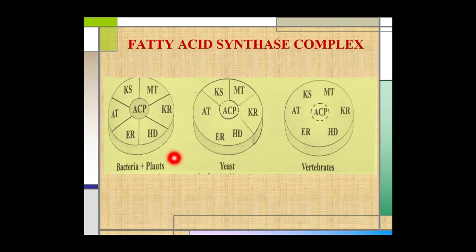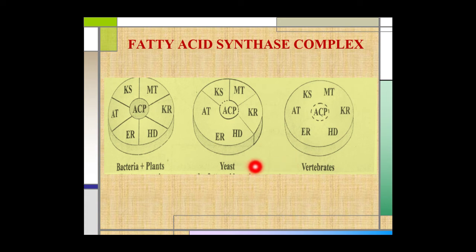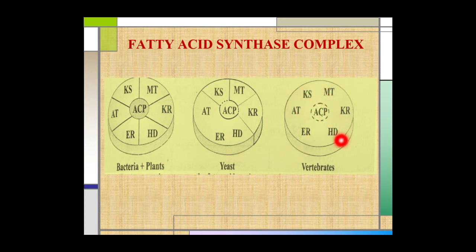The fatty acid synthase complex of higher plants is very similar to that of bacteria. The fatty acid synthase of yeast and vertebrates is also a multi-enzyme complex, but their integration is even more complete than that of E. coli. In yeast, the seven distinct active sites reside in only two large multifunctional polypeptide chains. In vertebrates, a single large polypeptide chain contains all seven enzymatic activities as well as the hydrolytic activity that cleaves the fatty acid from the ACP-like part of the enzyme complex. The active form of this multi-enzyme protein is a dimer.